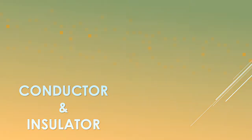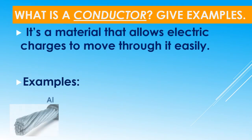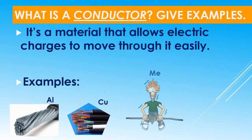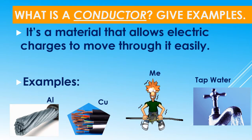Conductor and insulator. What is a conductor? It's a material that allows electric charges to move through it easily, like metals — for example, aluminium, copper, silver, gold, iron. Even you are a good conductor because your body is made of water and minerals. Moreover, tap water is a good conductor.